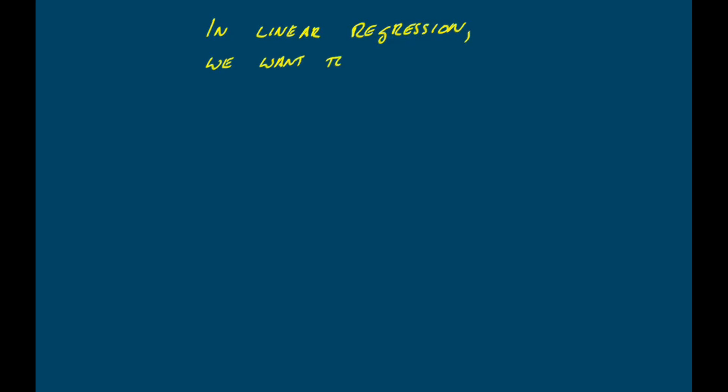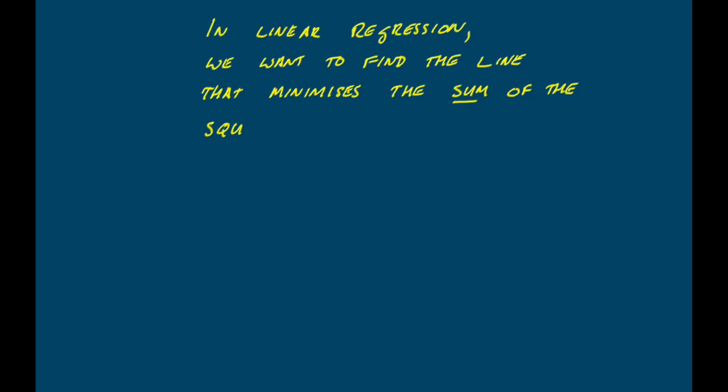In linear regression, what we're looking for is the line that gives us the lowest value for the sum of the squared residuals. So how do we find this line? Before we go any further, let's look at the way we can describe a line in terms of algebra.